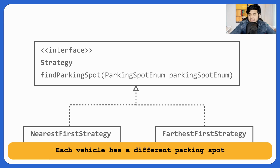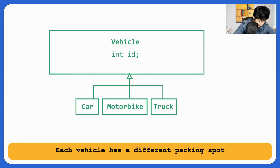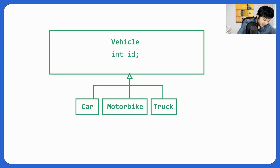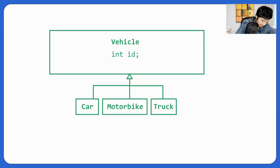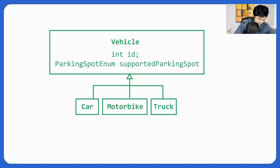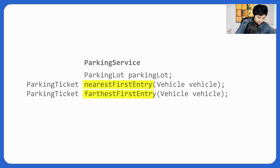Each vehicle has its own different parking spot, and we already have different vehicle classes. So in the Vehicle class, what if we add a 'supported parking spot' enum as a data member? This would save us from writing a case statement. Going forward, if a new vehicle type is added, we won't have to change our entry function again — which would otherwise violate the open-close principle. Adding the parking spot enum to the Vehicle class will make the complete operation O(1).